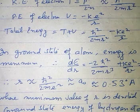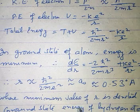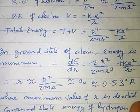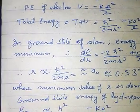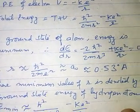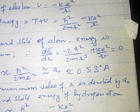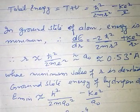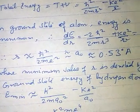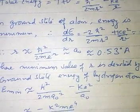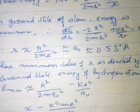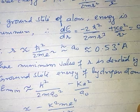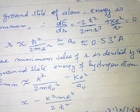On solving this equation, we get r equal to a0, which is equal to 0.53 angstrom, where the minimum value of r is denoted by a0. The ground state energy of the hydrogen atom, E minimum, will be equal to h-cross square upon 2m a0 square minus k e square upon a0.